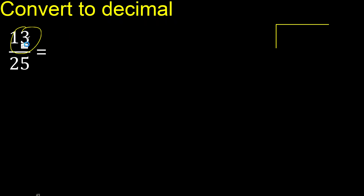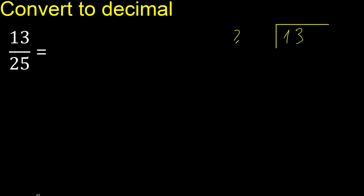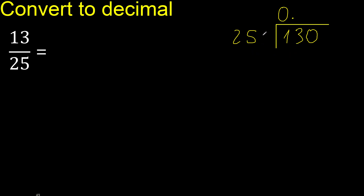13 divided by 25. 13 is less than 25, therefore complete — always complete with 0. Here: 0 point. 130 is not less than 25.